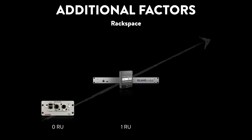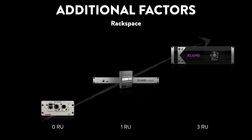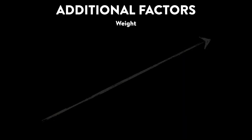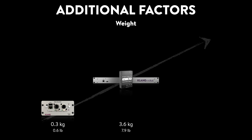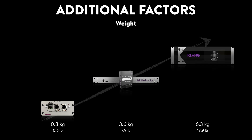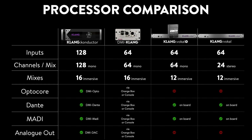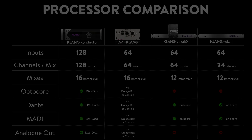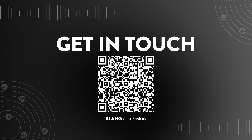Vocal rocks an 80s waistline with only one rack unit, where Clang Conductor deserves three to fit all 128 channels. Are you building a fly rack? DMI Clang is a winner at less than 300 grams, but even Vocal's 3.6 kilograms won't crash your flight, and Conductor in a Peli case will fly very well. Take a screenshot of this handy sheet for the most crucial details, and do get in touch with us or your local Clang partners in case of any questions.